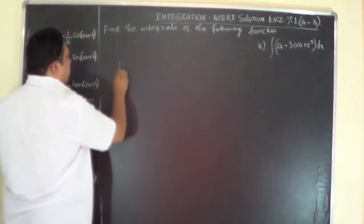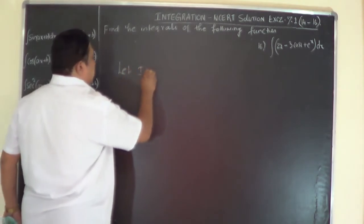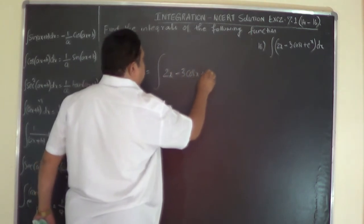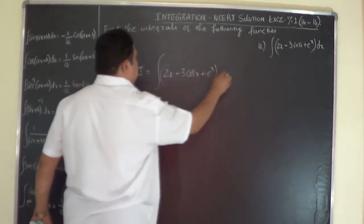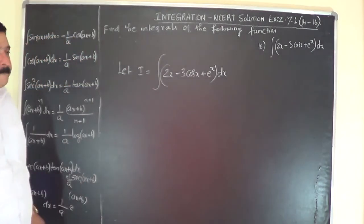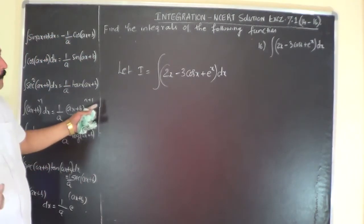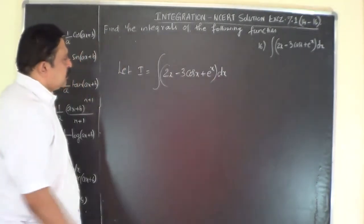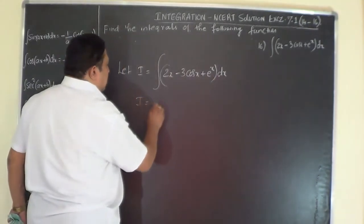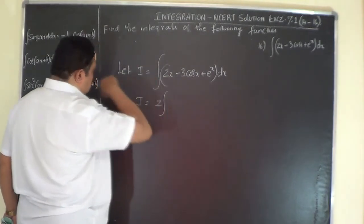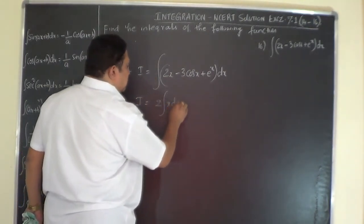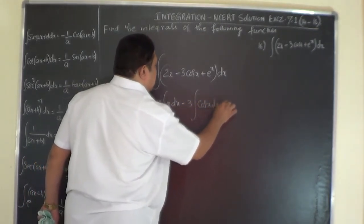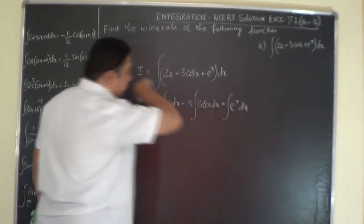Now for the last problem, Problem 16. As usual, call the problem as I. Let I be equal to ∫(2x - 3cos x + e^x) dx. Now there is nothing to multiply — there is no extra term here, just dx — so you just have to separate. While separating, keep the constant outside: 2·∫x dx minus 3·∫cos x dx plus ∫e^x dx. A very simple problem.